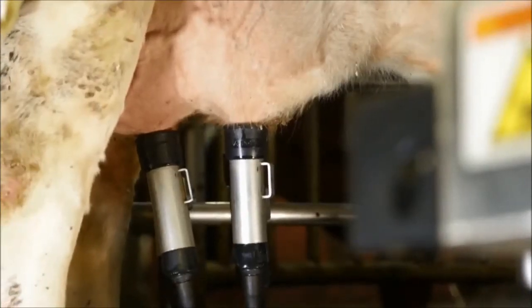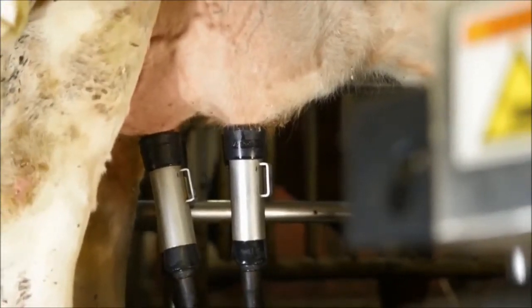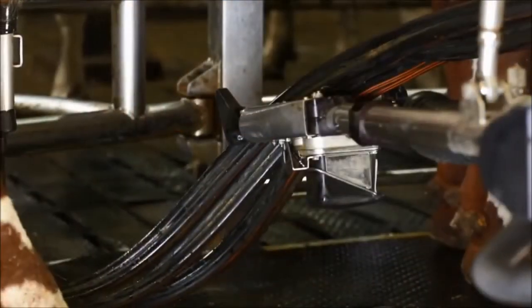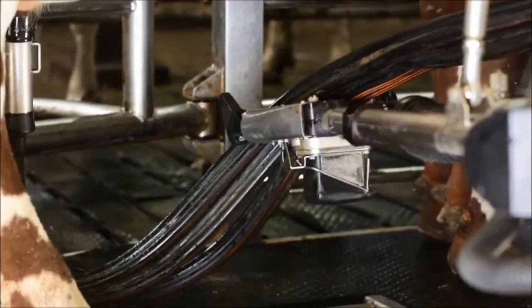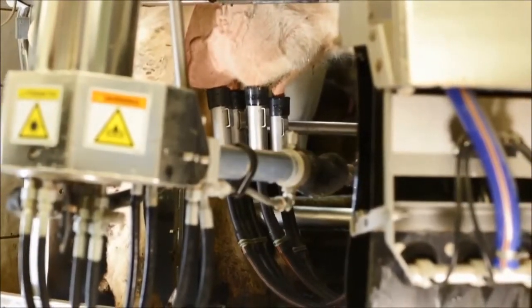The VMS instantly detects any fall-offs and initiates retraction before rinsing the cup and reattaching it, without taking off the rest of the teat cups, so milking can be completed.